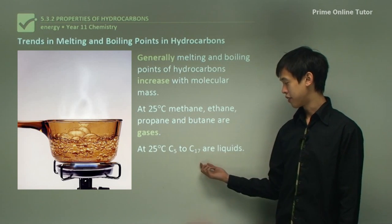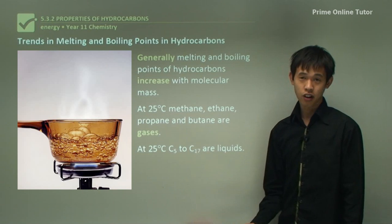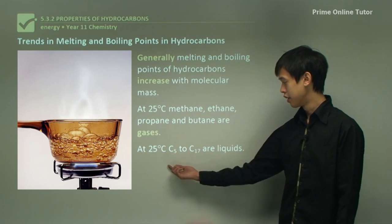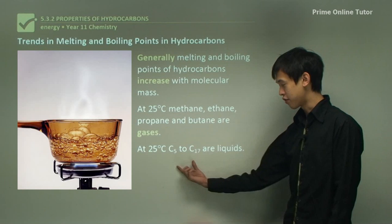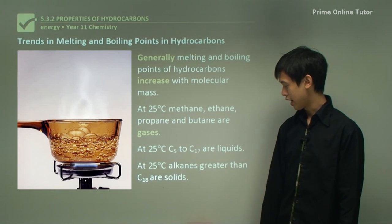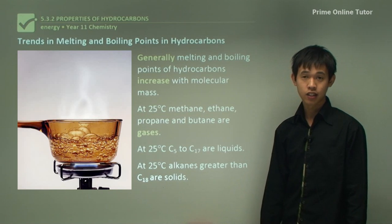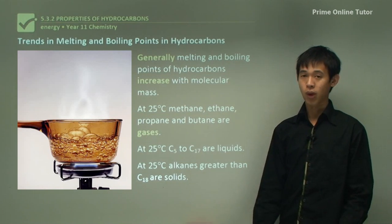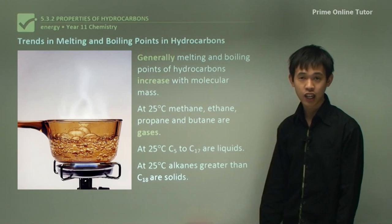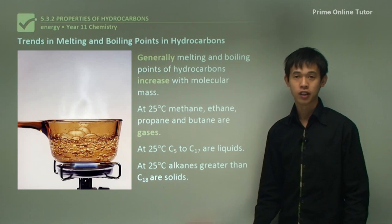From C5 to C17 — C8 is octane, which you know is liquid because that's your petrol — this range, C5 to C17, are all liquids. Anything bigger than C18 is generally a solid. So we're talking about waxes, paraffin wax, asphalt and bitumen — those kind of things. So they're all solid, and you can see that.